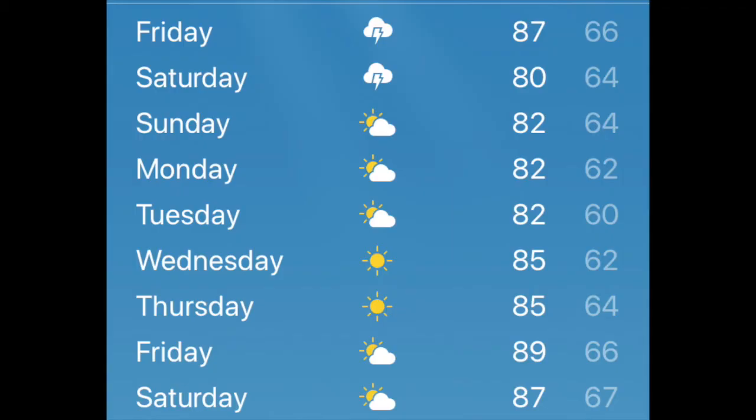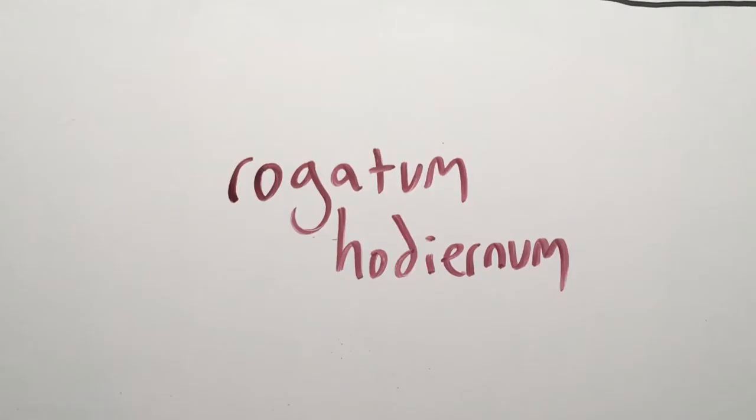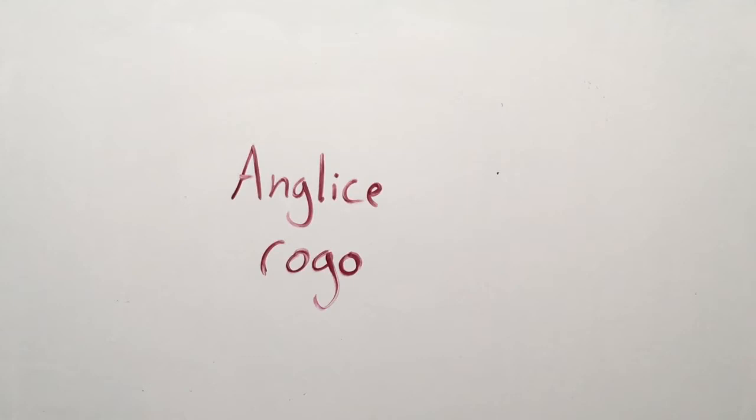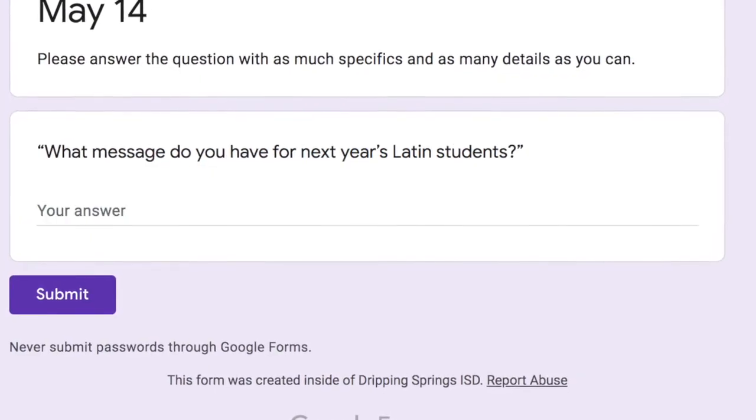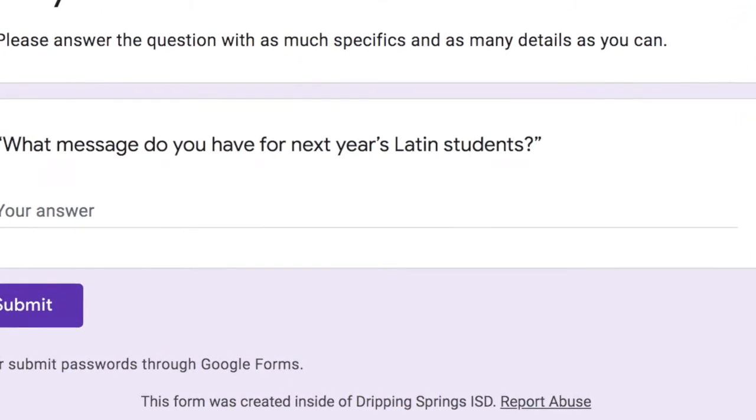Praedictio etiam est cras esse tempestuosum. Rogatum hadiernum iterum anglicae rogo de classe, scribe responsum tuum anglicae per Google Form apud canvas. Rogatum hadiernum est, what message do you have for next year's Latin students?